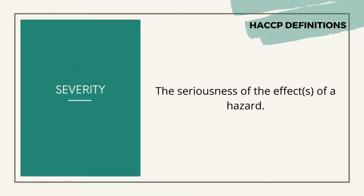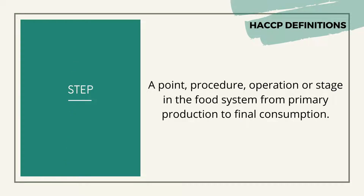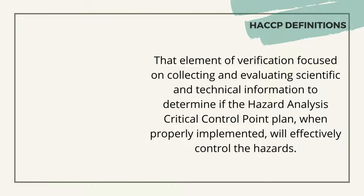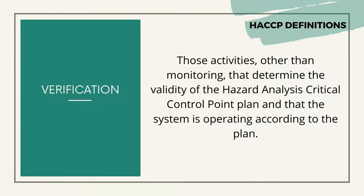Severity: the seriousness of the effects of a hazard. Step: a point, procedure, operation, or stage in the food system from primary production to final consumption. Validation: that element of verification focused on collecting and evaluating scientific and technical information to determine if the HACCP plan, when properly implemented, will effectively control the hazards. Verification: those activities other than monitoring that determine the validity of the HACCP plan and that the system is operating according to the plan.